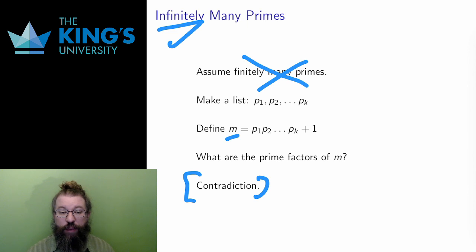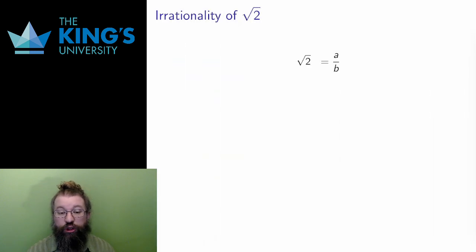Another classic example is the proof that root 2 is irrational. I will also prove this by contradiction. So step 1: Assume the statement is false. The statement says that root 2 is irrational. If that is false, then root 2 must be rational. Therefore, my assumption is that root 2 is rational.